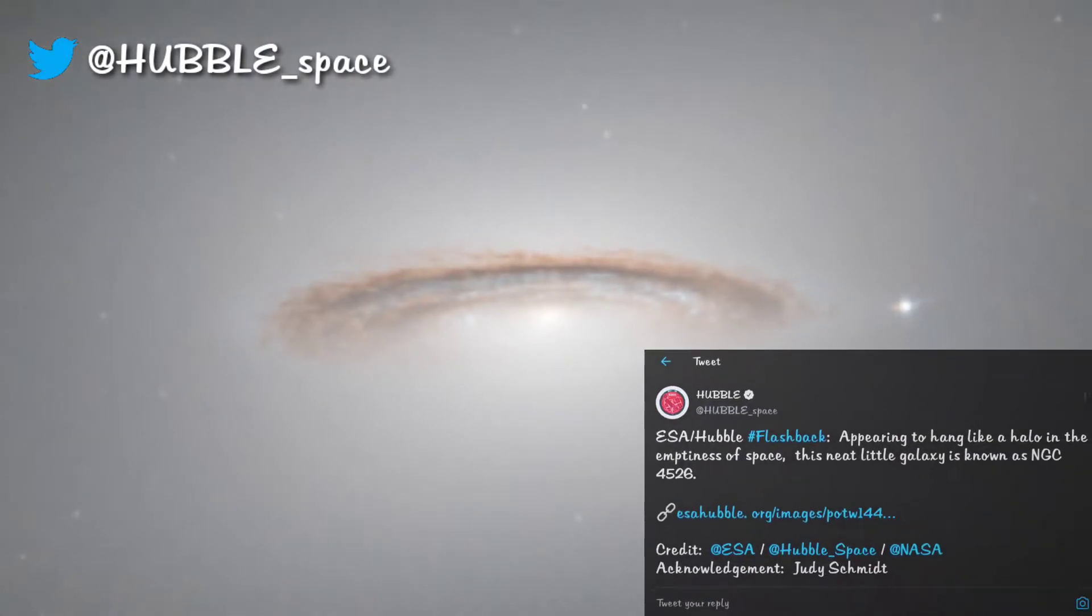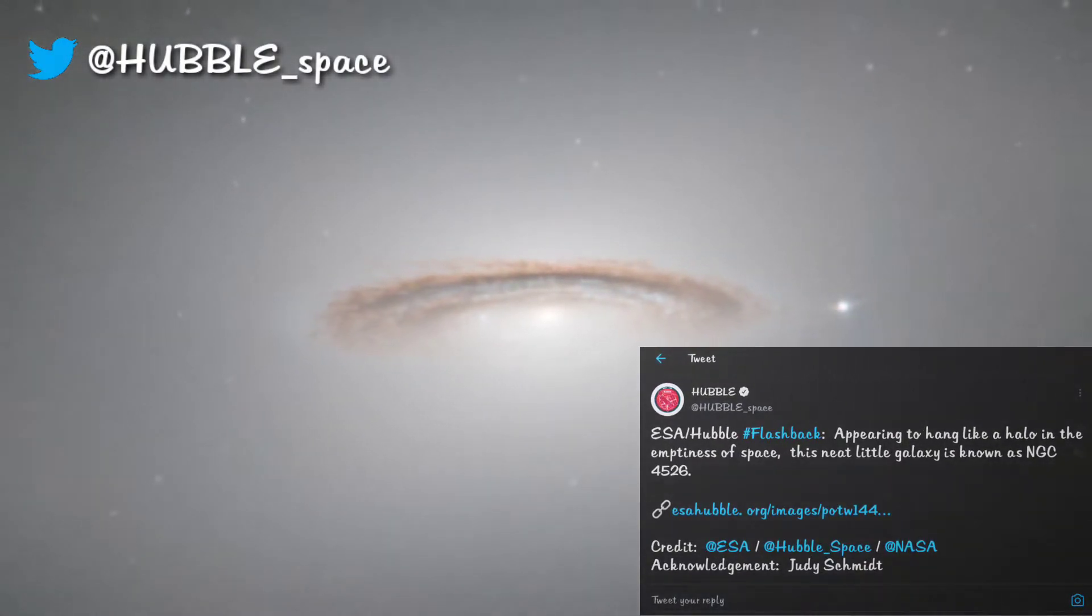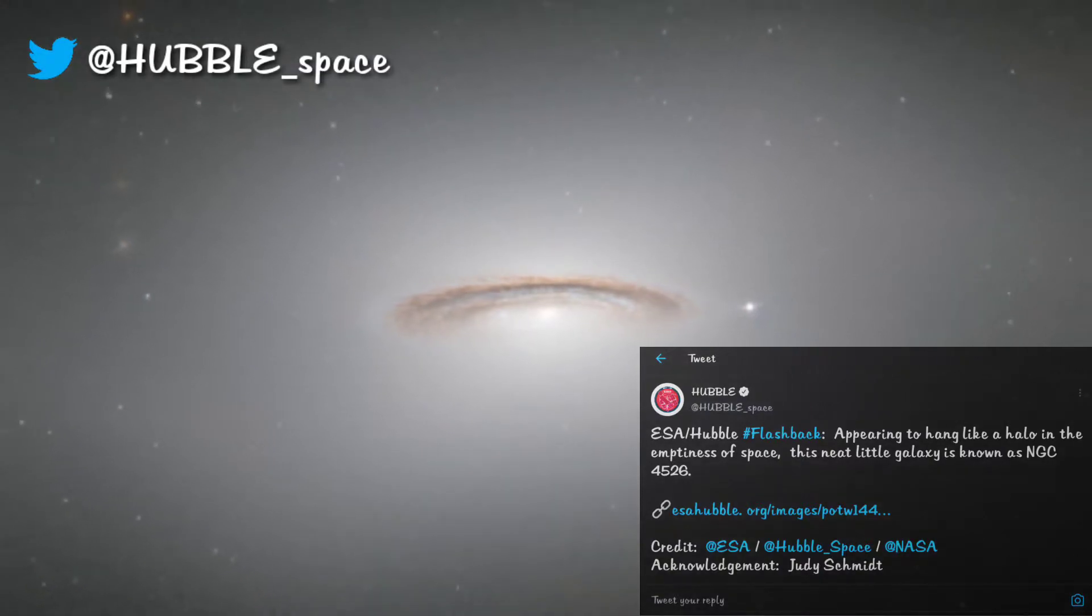ESA Hubble flashback: Appearing to hang like a halo in the emptiness of space, this neat little galaxy is known as NGC 4526.